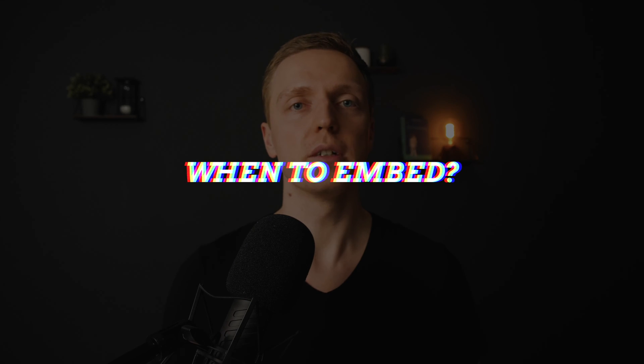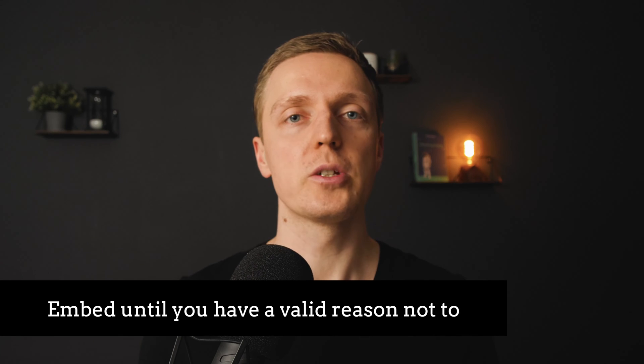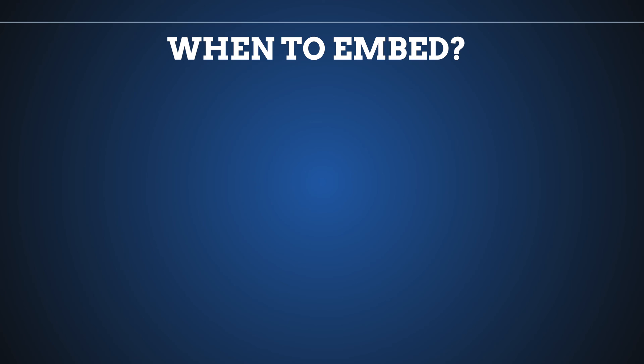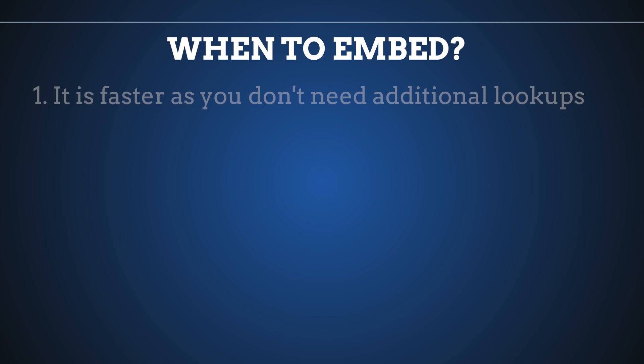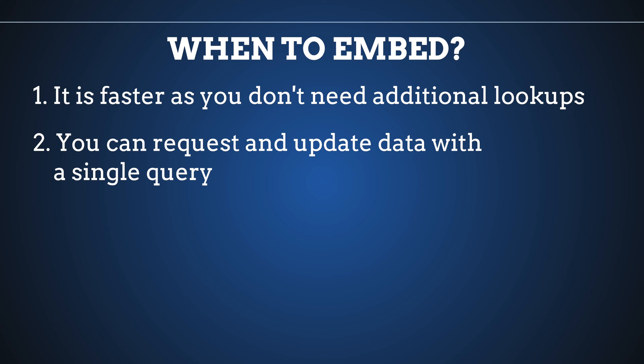This is awesome because we simply query our users and we get all data with a single query, without any additional requests or joins. So rule number three is: embed unless you have a valid reason not to. Embedding is really powerful and you must always prefer embedding over referencing — first because it is faster with no joins or lookups, and secondly you can request or update all this data with a single query without needing multiple updates to the user, role, and department separately.